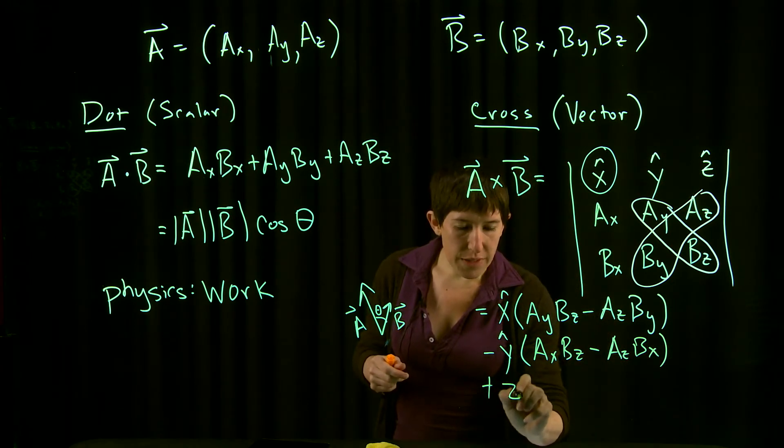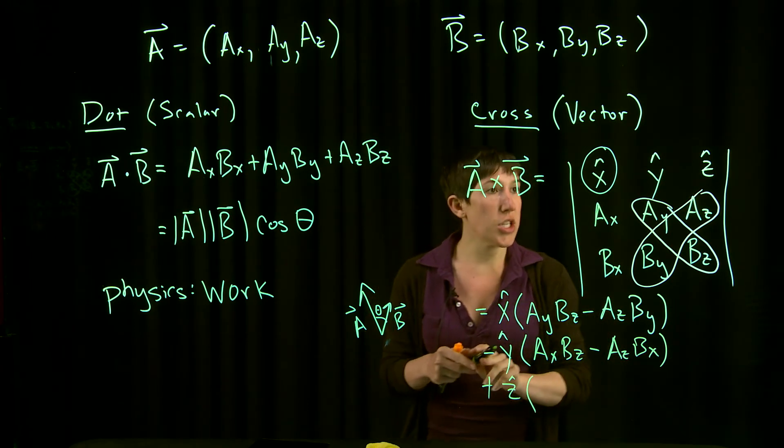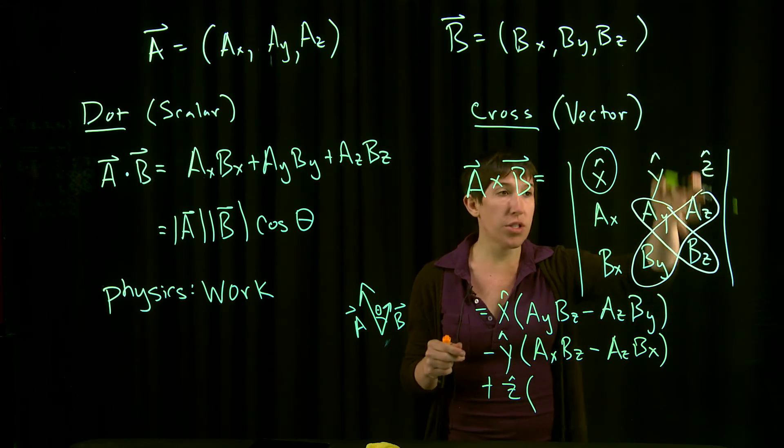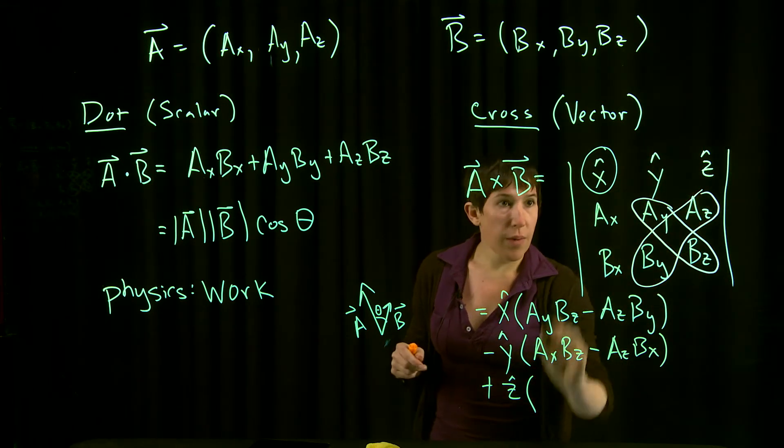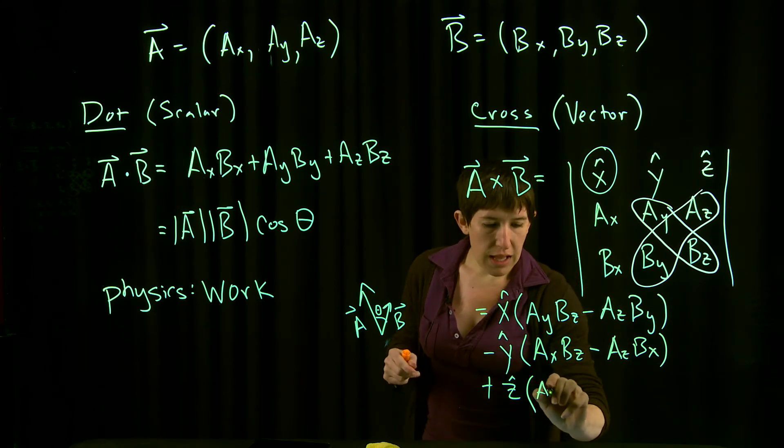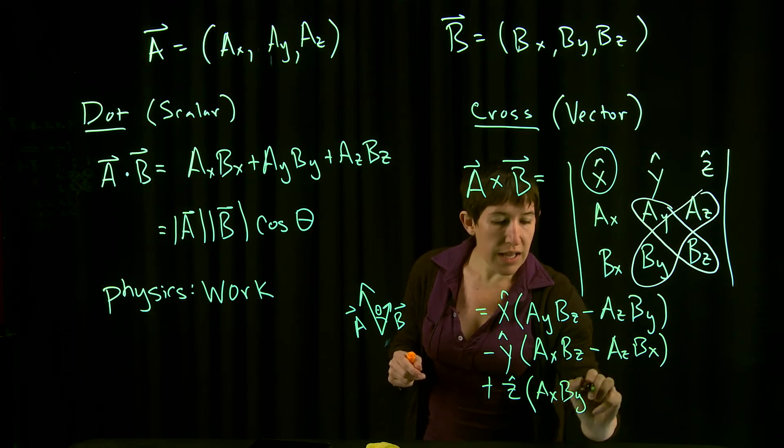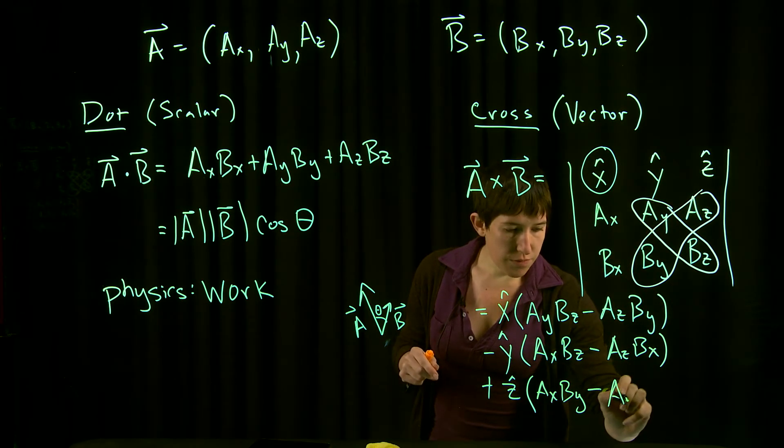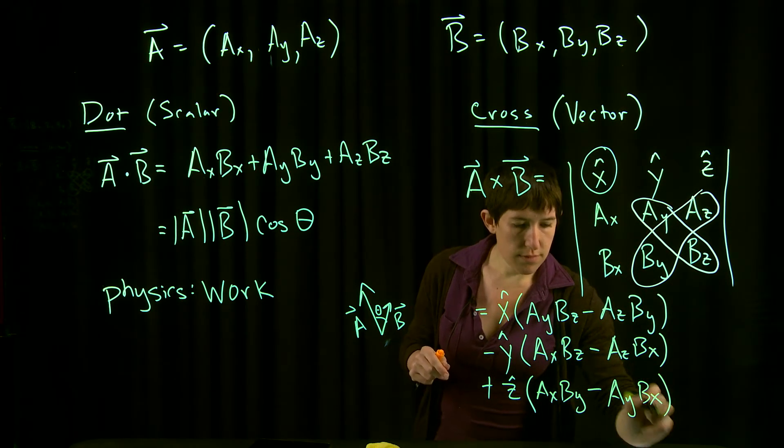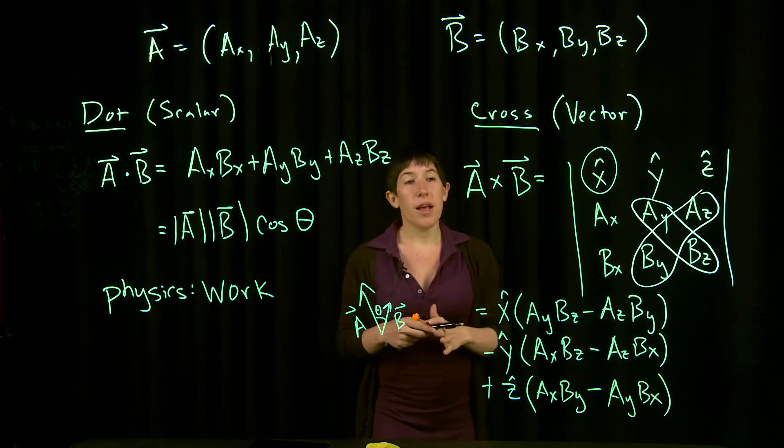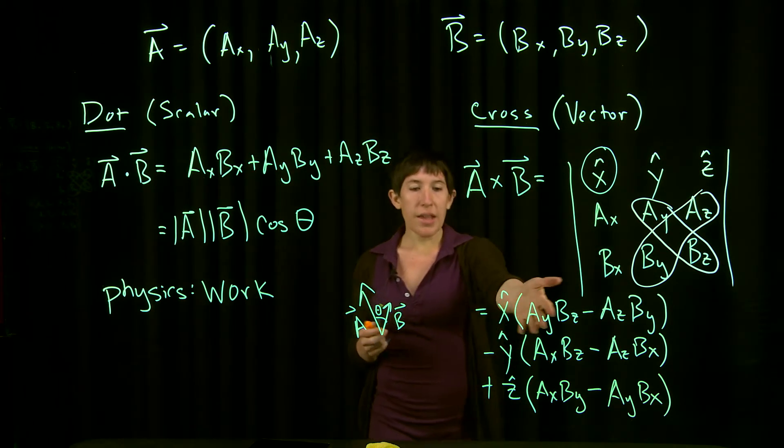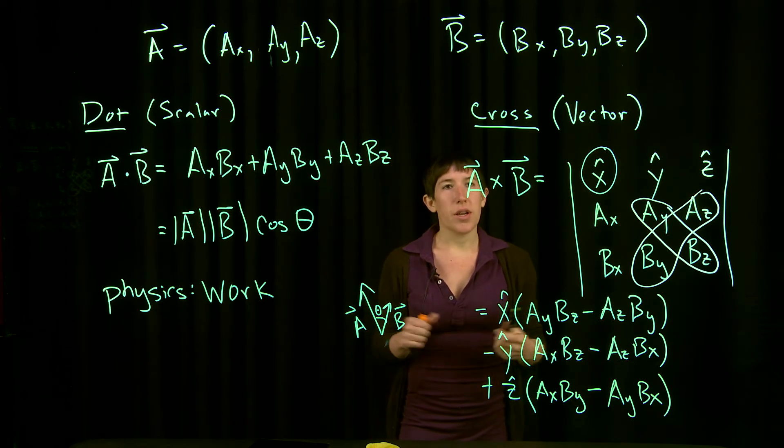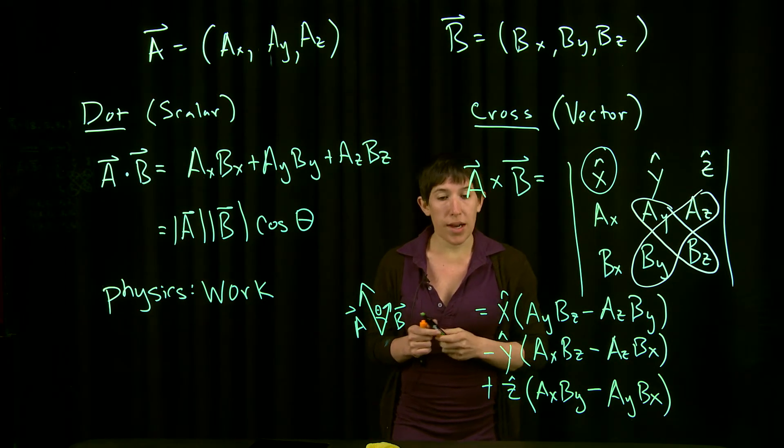Finally, we add the third piece in the z-hat direction. Again, we don't include the original z components. We have z-hat times (Ax*By - Ay*Bx). If you aren't familiar with determinants, that's okay. You can simply look up this formula or remember it.